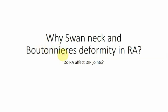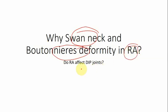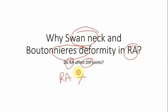Good morning. Today we are going to answer this question: why do swan neck deformity and boutonniere deformity happen in rheumatoid arthritis? We all know the one-liner that rheumatoid arthritis never affects the distal interphalangeal joint — but still, why are swan neck deformity and boutonniere deformity leaving something in the distal interphalangeal joint?